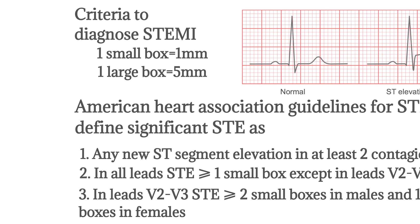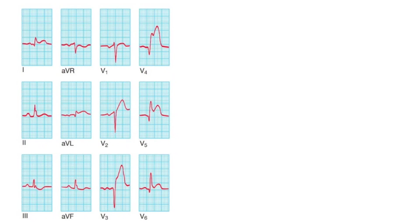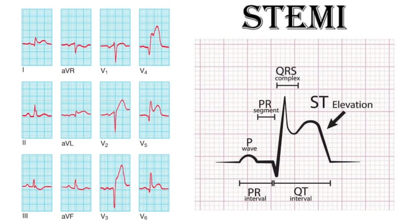Now let's apply what we have learned to the available EKG strip. In this EKG strip, you can see there is ST segment elevation in leads V2, V3, V4, V5, V6, I, and AVL. These are our anterior and lateral leads, so this is going to be anterolateral wall myocardial infarction, and these ST segment elevations are present in contiguous leads.